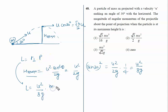So finally we are getting root 3 upon 16 m u cubed upon g. Root 3 upon 16 m u cubed upon g, option 1. So option 1 is the correct answer to this problem.